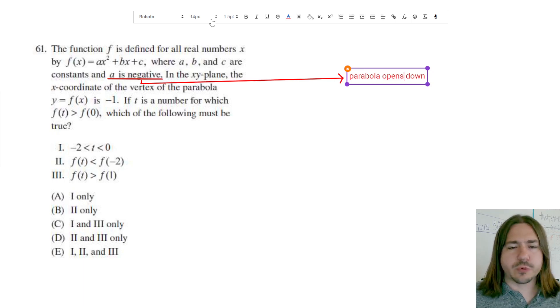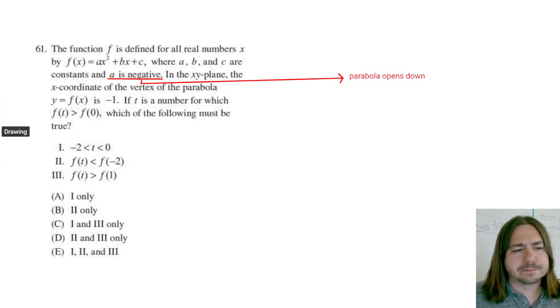In the xy plane, which is the normal plane that we graph on, the x-coordinate of the vertex, so we'll talk about that in a second, the x-coordinate of the vertex of the parabola is negative 1. If t is a number for which f(t) is greater than f(0), which of the following must be true? And then there's some inequalities here. And really, these are going to have to do with the value of the function at these x values. So let's try to visualize what's going on here.